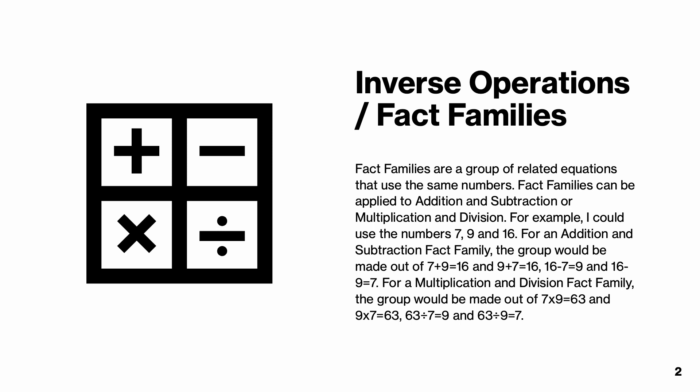For example, I could use the numbers 7, 9 and 16. For an addition and subtraction fact family, the group would be made out of 7 plus 9 equals 16 and 9 plus 7 equals 16. 16 minus 7 equals 9 and 16 minus 9 equals 7.